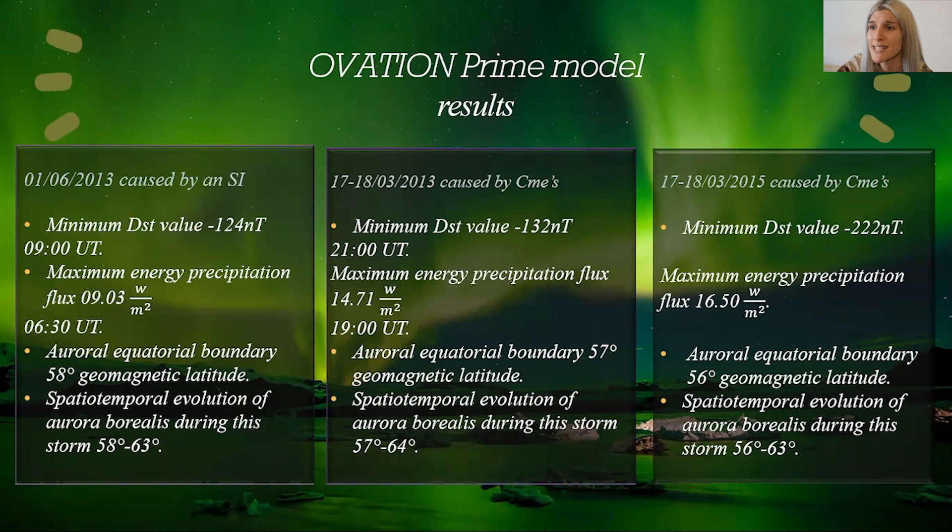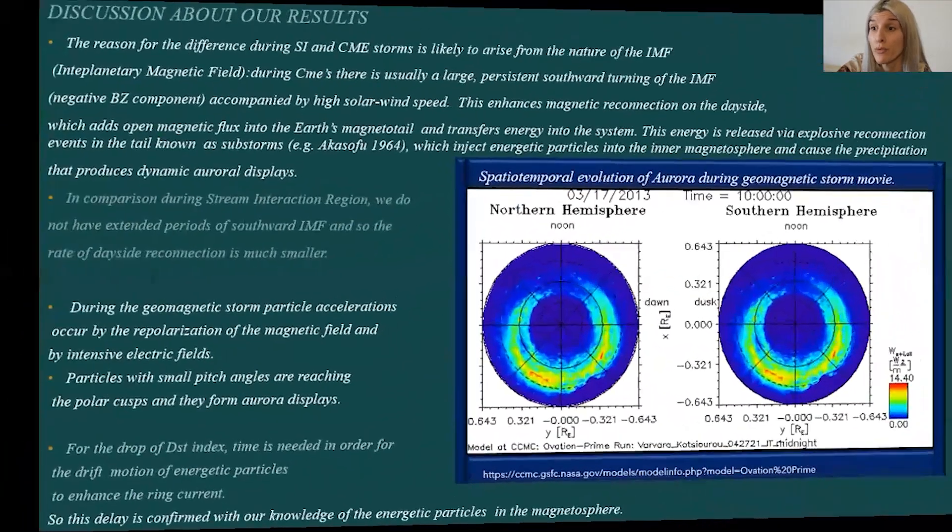This enhances magnetic reconnection on the day side, which adds open magnetic flux into the Earth's magnetotail and transfers energy to the system. The explosive reconnection events in the tail, known as magnetospheric substorms, inject energetic particles into the inner magnetosphere and cause the precipitation that produces dynamic aurora displays.